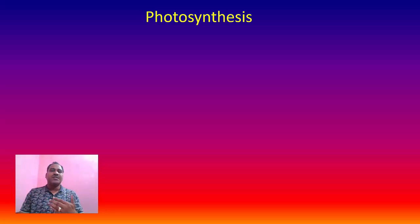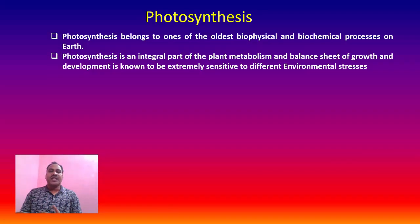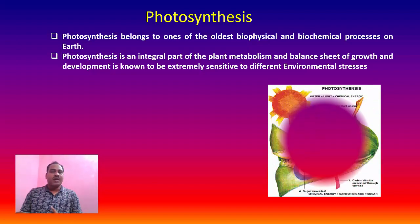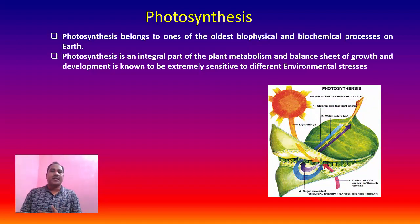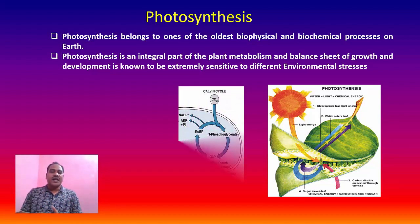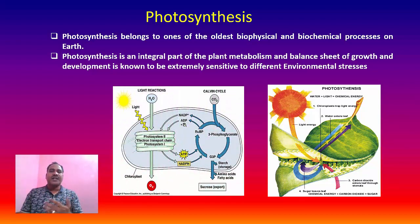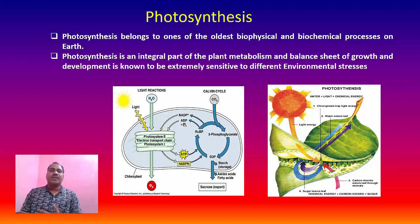Photosynthesis is the oldest biophysical and biochemical process on this earth. It is an anabolic process which takes place in the plant leaf, taking carbon dioxide and water to make carbohydrates in the presence of sunlight. It completes in two stages: one is called the light reaction, and another is called carbon fixation.